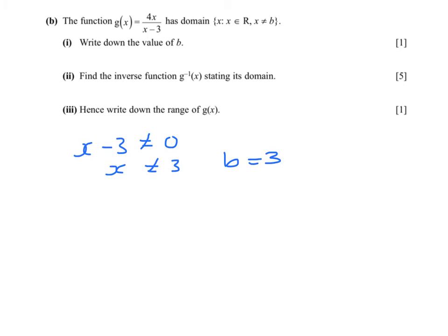To find the inverse function, I'm going to let y equal 4x over x minus 3. And now I'm going to change the subject of the formula. I want to end up with x equals. So to get that, I'm going to multiply across and expand my brackets.